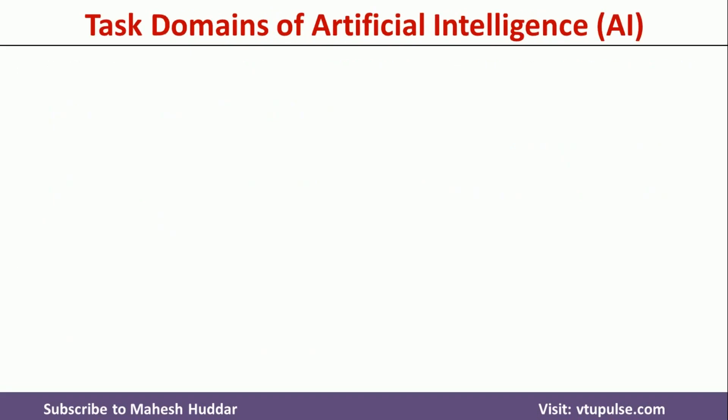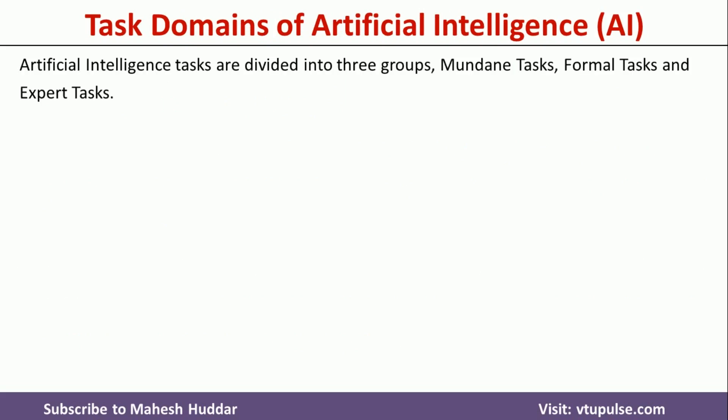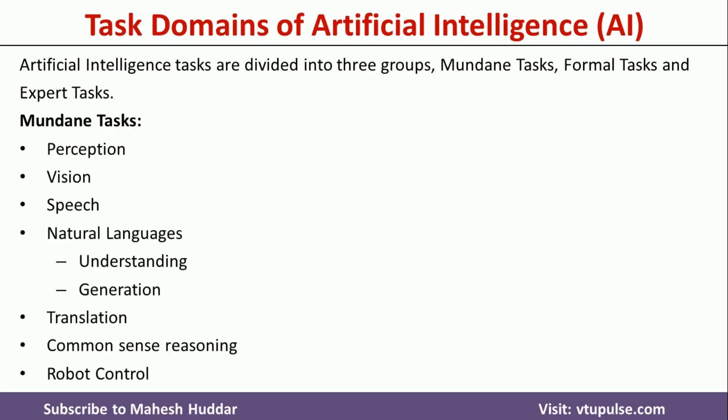Now, what are the different task domains in Artificial Intelligence? The tasks in Artificial Intelligence are divided into three groups: mundane tasks, formal tasks, and expert tasks. Examples for mundane tasks are perception, vision, speech-related tasks, natural language understanding, natural language generation or translation from one language to another, common sense reasoning, and robot control.